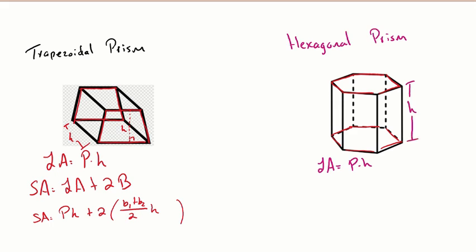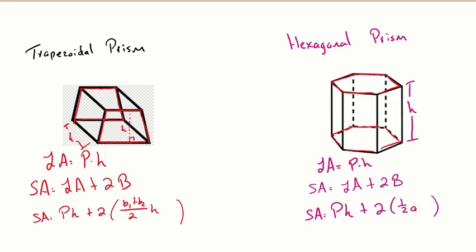The height is the distance between one base and the other. Total surface area is once again lateral area plus two times the base area, which looks like perimeter times height, plus two times the area of a regular polygon. That formula is one half the apothem times the perimeter, where the apothem goes from the center perpendicular to a side.